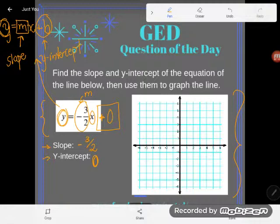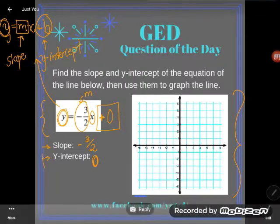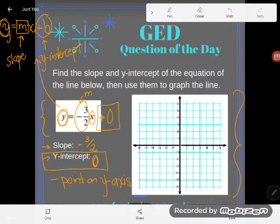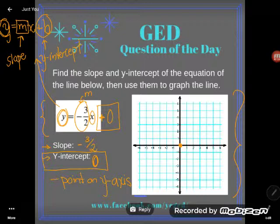Let's now use those bits of information to graph the line. Now remember, you should start with the y-intercept. The y-intercept is actually a point. It's a point on the y-axis because it's where my graph, my line, crosses the y-axis. So my line is going to cross at zero. Okay.